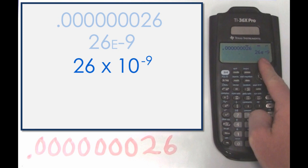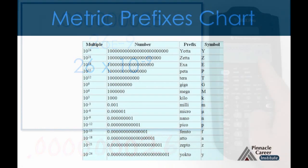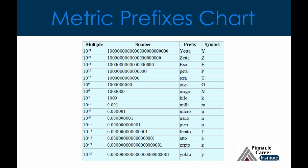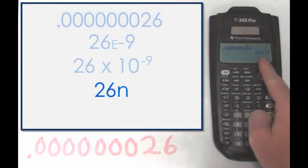In some scenarios, you'll want to simplify this number even further by using metric prefixes. 26 times 10 to the negative ninth can be simplified as 26 nano.